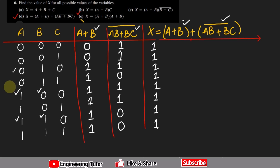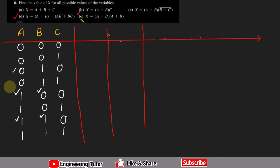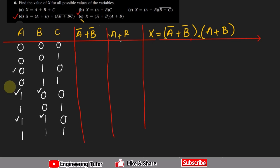Now let me solve part e. For part e, X is equal to (a prime plus b prime) multiplied by (a plus b). That is the dot product. Here we have to find a prime plus b prime, and also find a plus b, and at the end multiply them. The same procedure as before will be used.